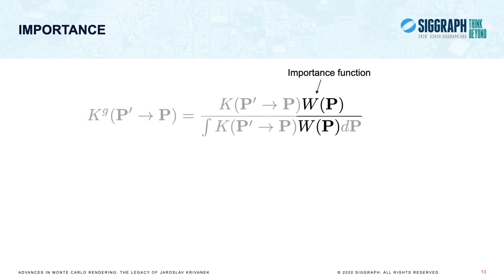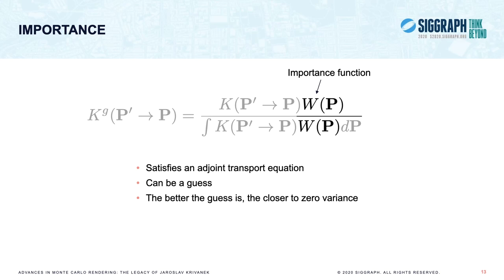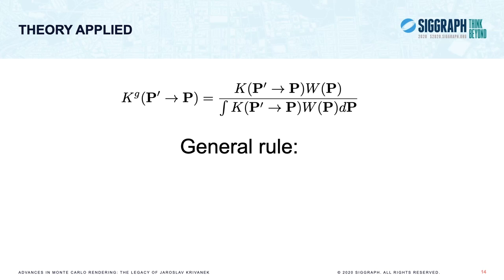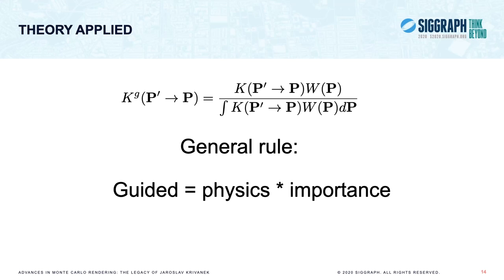The fundamental equation of zero variance theory is that the perfectly zero variance guided kernel is formed as the product of the classical unguided kernel K times some importance function W, normalized because we want the guided kernel to be a normalized set of decisions. This importance function W follows from an adjoint transport equation. The interesting part of the theory is that this doesn't need to be exact for the theory to add value — you can make it approximate, plug in something you are able to normalize and product-sample. The better your guess, the closer your total path sampling will get to zero variance.